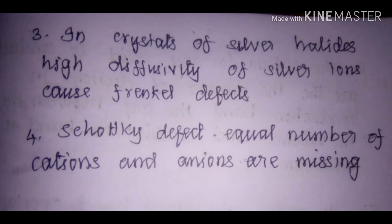The next statement: in crystals of silver halides, high diffusivity of silver ions causes Frenkel defects — this is also correct. In silver halides, the silver ion has a smaller size, so the cation is smaller and the halide anions are bigger. Hence the silver ion diffuses to the interstitial position, leaving its original position vacant. The next statement: in Schottky defects, equal numbers of cations and anions are missing — this is also true, to maintain electroneutrality.